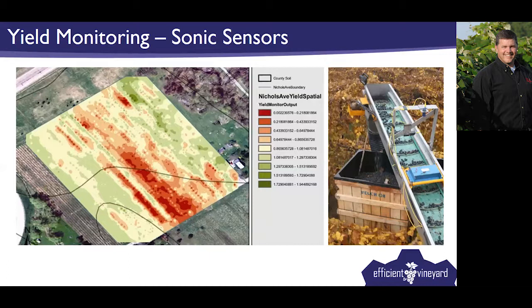We didn't do much more work on the sonic sensor. The advantages were that it was relatively inexpensive and gave nice relative yield maps. We really stopped doing validation work — attributing the electronic signal to actual tonnage — because volume changes with berry size between varieties like Concord versus Riesling. If you could get a weight signal, that would be more accurate.